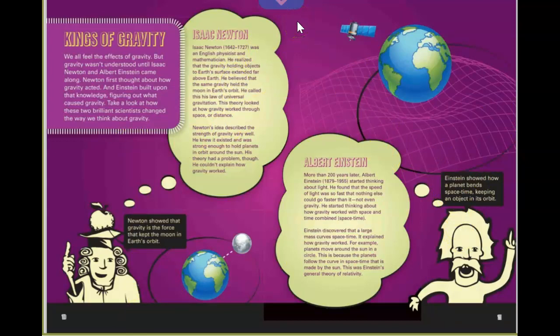Then over here is Einstein, who showed us how a planet bends in space-time, keeping an object in its orbit. Isaac Newton was born in 1642, and he died in 1727. He was an English physicist and mathematician. He realized that gravity, holding objects to the Earth's surface, extended far above the Earth. He believed that the same gravity held the moon in the Earth's orbit. He called this the law of universal gravitation. This theory looked at how gravity worked through space or distance. Newton's idea described the strength of gravity very well. He knew it existed and was strong enough to hold planets in orbit around the sun. His theory had a huge problem, though. He couldn't explain how gravity worked.